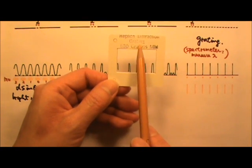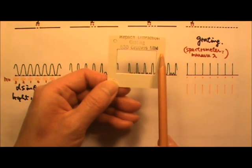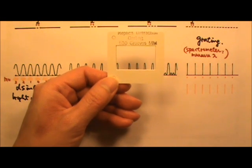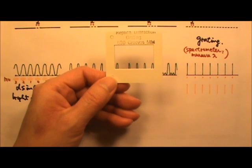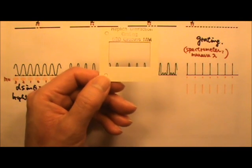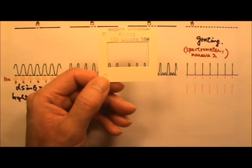Here I have a diffraction grating that has 530 grooves per millimeter, which means 530 slits per millimeter. There are very many slits that are very closely spaced. So we cannot see the slits and this grating looks transparent.